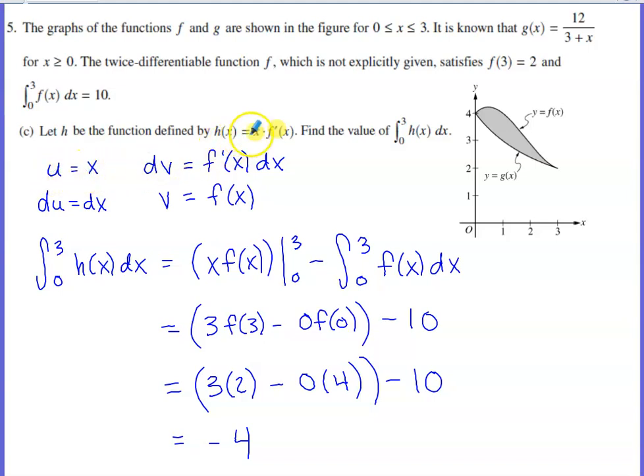Let u equal the first part of the product, and let dv equal the second part. Taking the derivative, du equals dx. Integrating both sides tells me that v equals f of x. The integral from 0 to 3 of h of x equals uv, so x times f of x, evaluated at 3 and 0, minus the integral from 0 to 3 of f of x dx. They give us that integral equals 10.